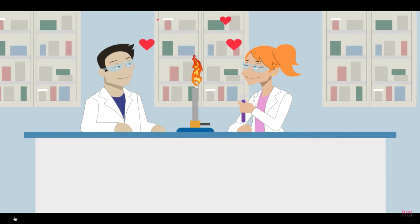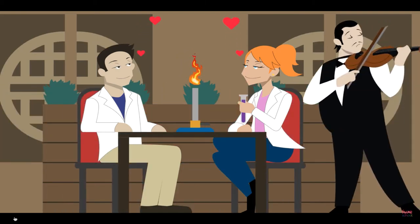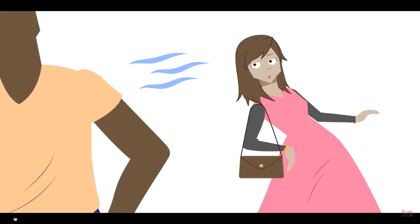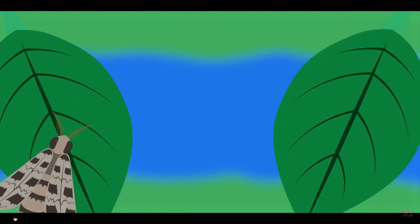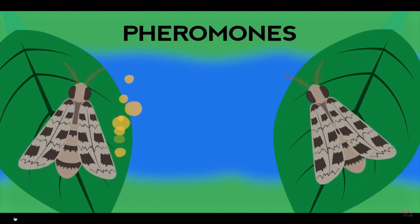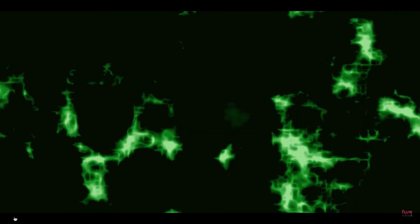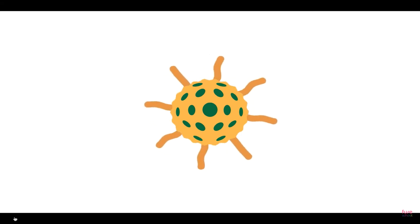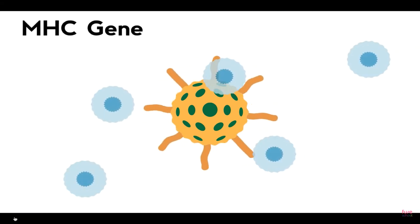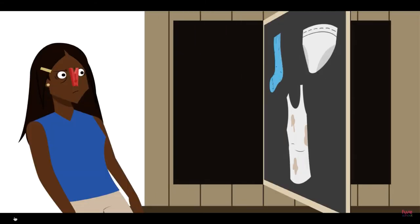Have you ever heard the expression 'they had chemistry'? When it comes to sexual attraction, that expression is fairly accurate — not in the sense of a romantic candlelit dinner, but because of the involvement of certain biological scents. It's been known for a long time that animals release chemical hormones called pheromones that are involved in sexual attraction. That is, until 1995, when a study looked at how a man's genes — that's DNA, not blue jeans — could be detected by women through their sense of smell. The study focused on the MHC gene, which instructs a type of immune response in the body.